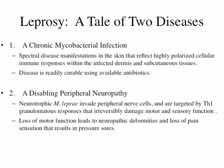Leprosy is really a tale of two diseases. First, it's a chronic mycobacterial infection that results in spectral disease manifestations in the skin, reflecting highly polarized cellular immune responses within the infected dermis and subcutaneous tissues — and this is readily curable using available antibiotics. But it is also a disabling peripheral neuropathy: M. leprae invades peripheral nerve cells, specifically the Schwann cell, and they're targeted by Th1 T cells in a granulomatous response that is very destructive to the nerve. Loss of motor function leads to neuropathic deformities and loss of pain sensation that results in pressure sores.